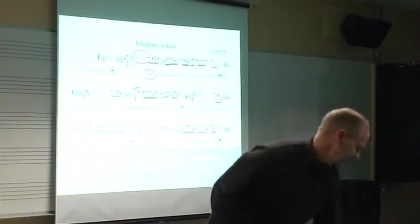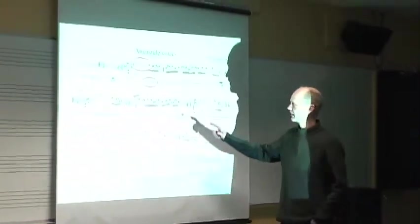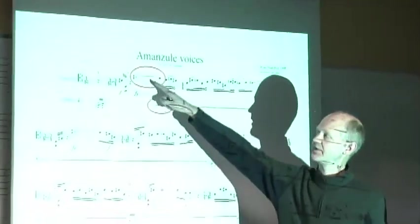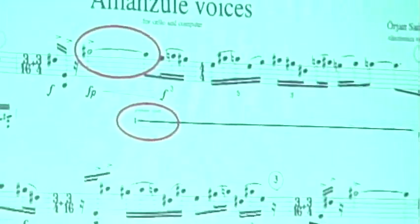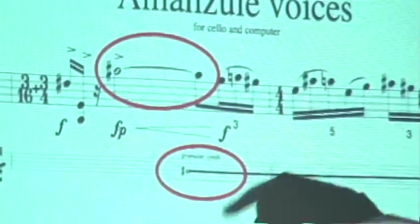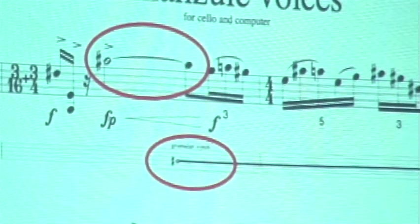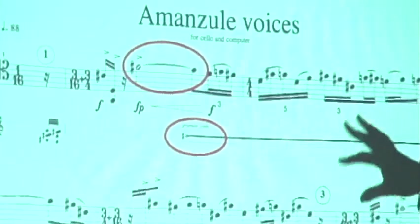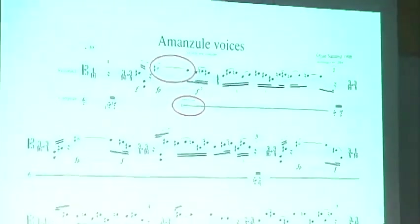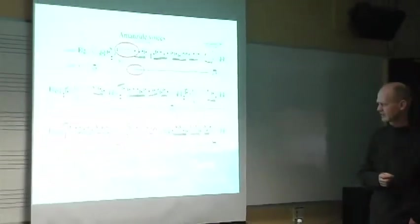The other thing I didn't really need the score follower for was to make the connection between what's happening here in the live electronics and this pitch, a G sharp. That G sharp in the cello is picked up by the computer, and then it's making granular synthesis of that G sharp for quite a long time. It's walking away from that G sharp, but the seed for that sound comes from that pitch.